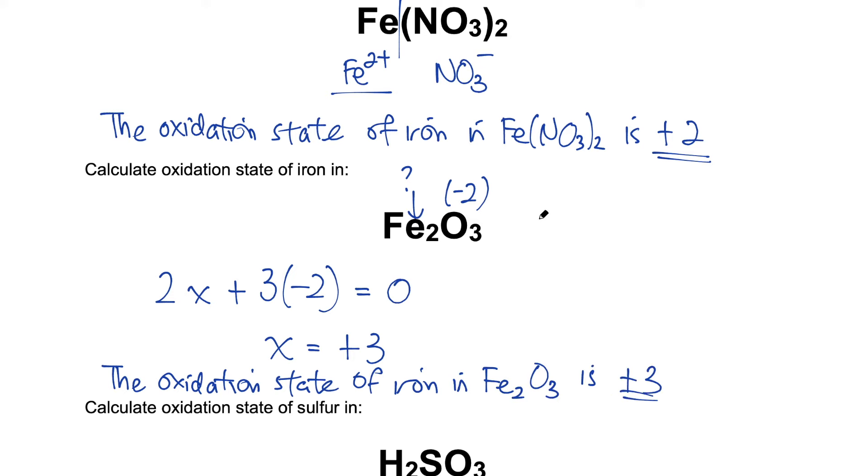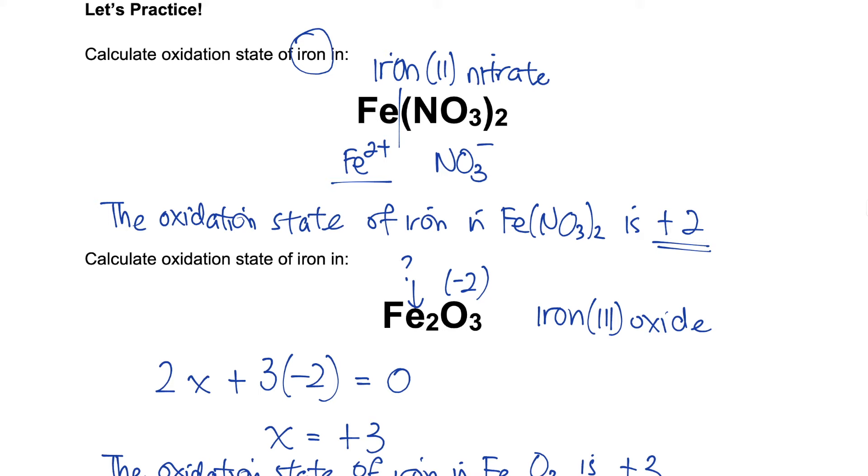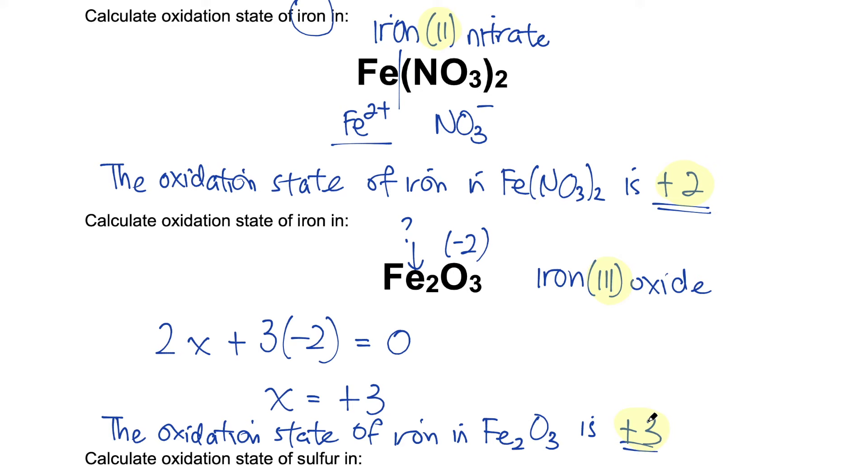This compound is called iron three oxide. Now let me move up a little. Do you see some similarities over here? The roman numerals that we have always seen actually refers to the oxidation state of that particular element. So when we write iron two, it refers to the oxidation state of iron being plus two. Same over here, iron three.